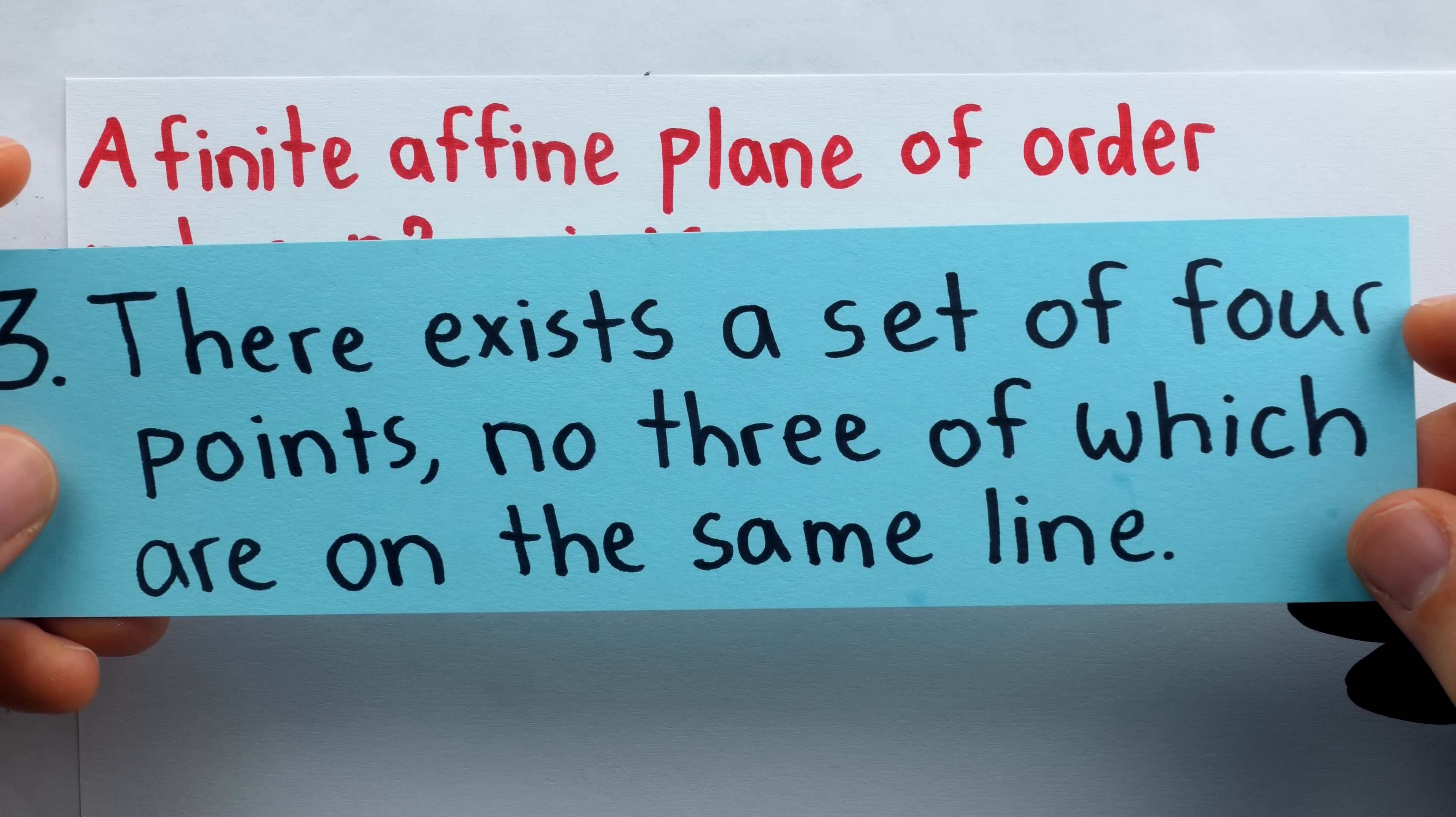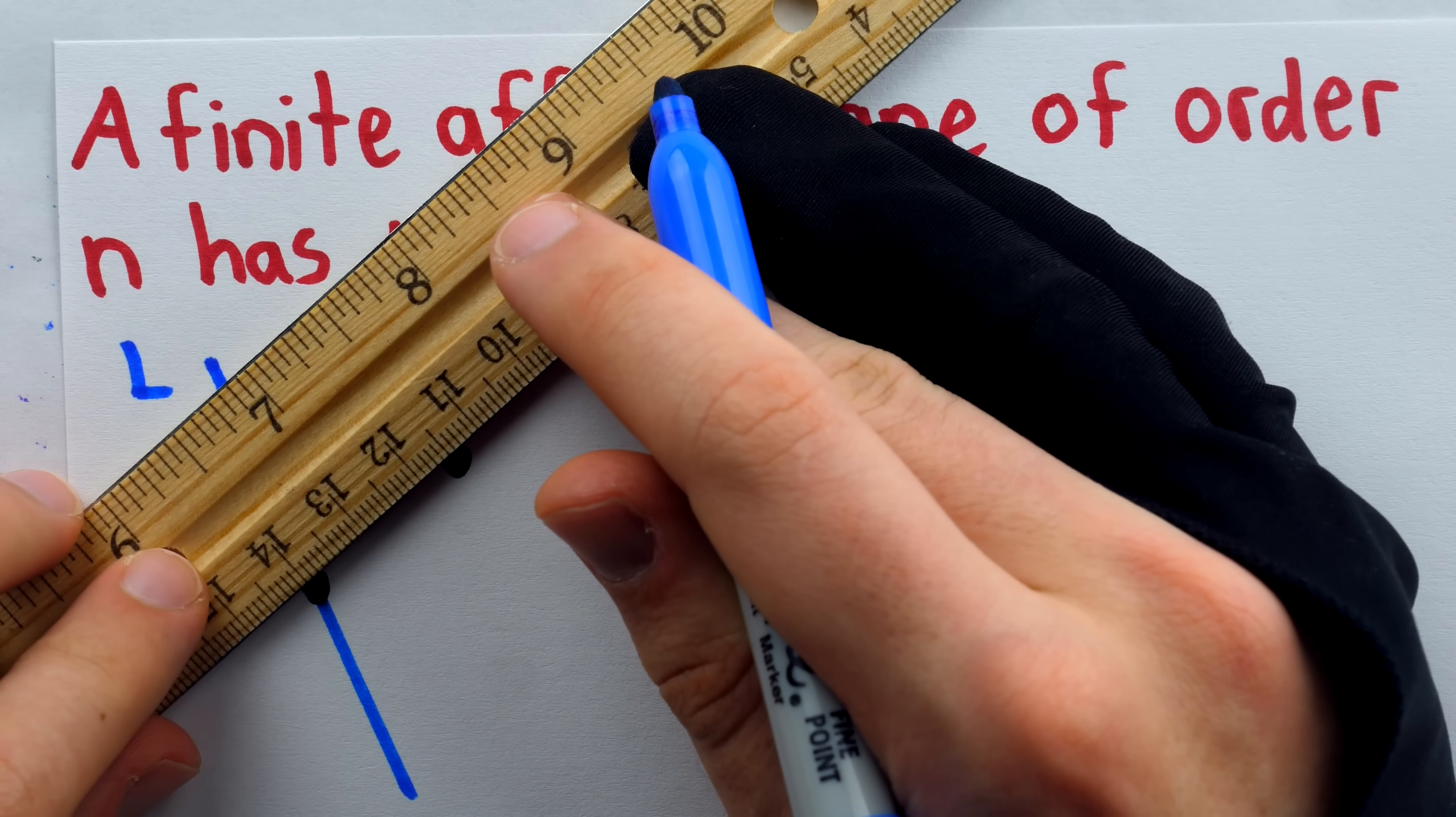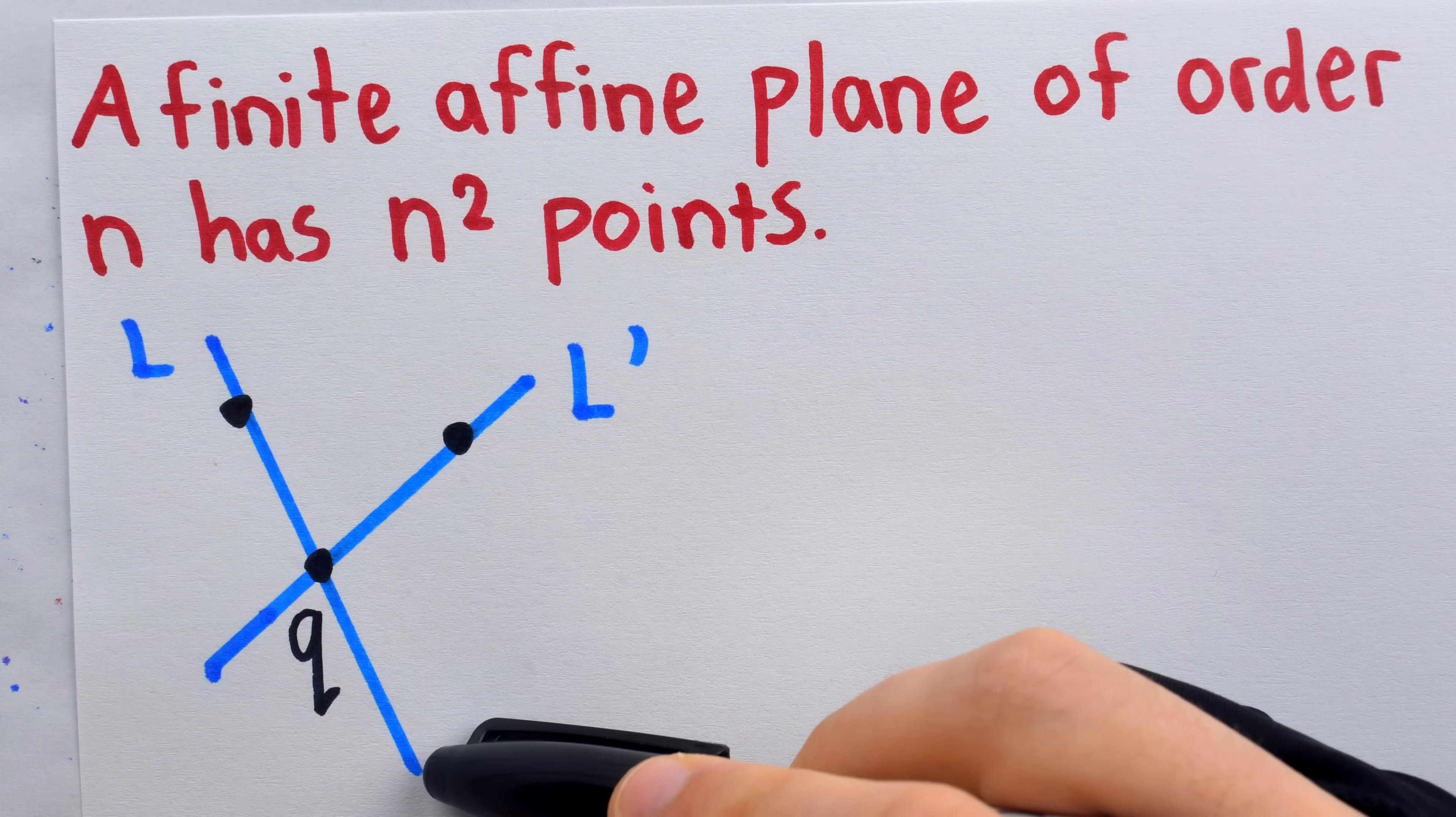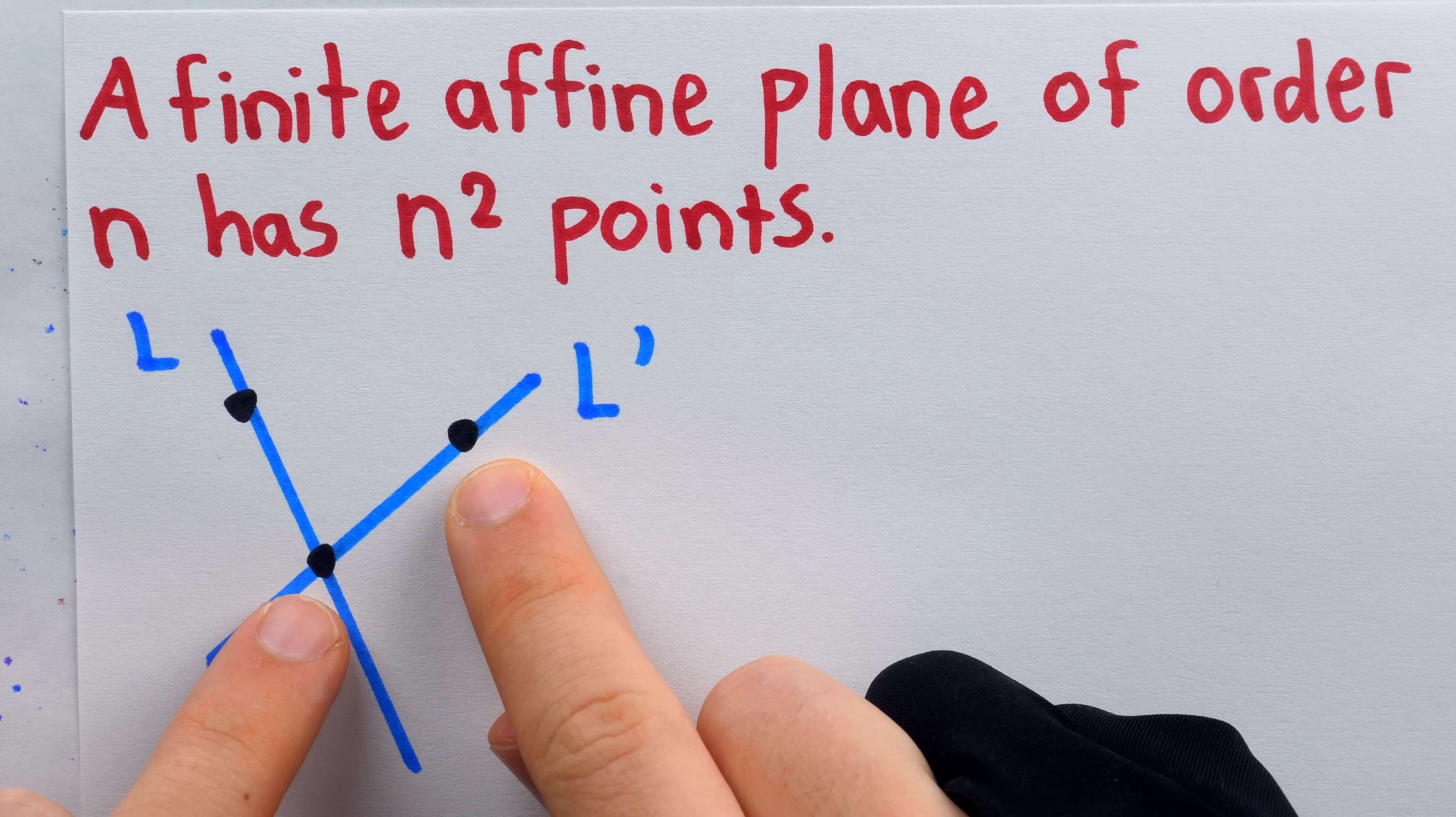Now, remember from axiom three, we're guaranteed a set of four points, no three of which are on the same line. That means we're free to take three points that guaranteed are not co-linear. And of course, each pair of these points defines a line. We'll call this one line L and we'll call this other one L prime. And let's call this point they share point Q. Again, remember we're working in a finite affine plane. That means that these lines, although they're drawn to look like continuous objects, they have some finite number of points on them. That number is n. Of course, from axiom one, that number n of points on a line has to be at least two.